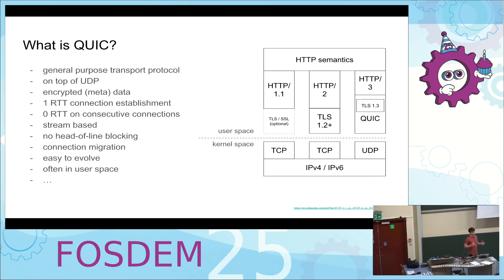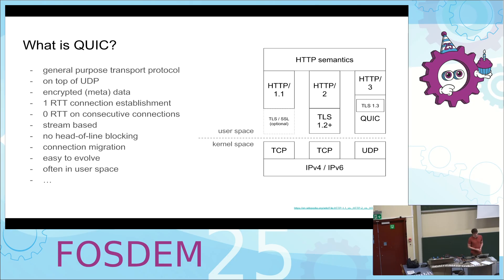Let's put this in the larger picture of web protocols. Most of you are probably familiar with HTTP semantics. In the early days, that would go over HTTP 1, optionally encrypted with TLS/SSL, on top of TCP, then into your IP stack. Later we had HTTP 2, encryption mandatory with TLS 1.2 and 1.3, running on top of TCP, then on top of IP. And now the new thing is: same semantics for your application, but under that we have HTTP 3, running on top of QUIC, tightly integrated with TLS, on top of UDP this time, with IP underneath.